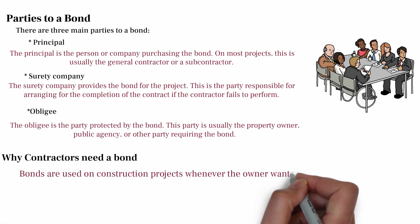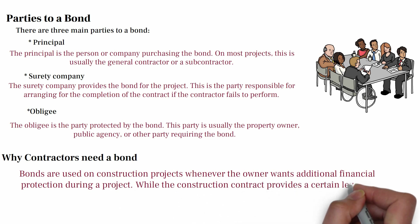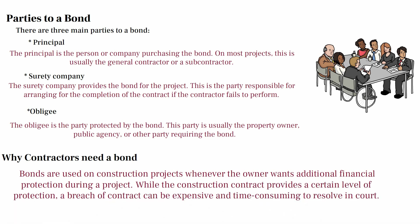Bonds are used on construction projects whenever the owner wants additional financial protection during a project. While construction contracts provide a certain level of protection, a breach of contract can be expensive and time-consuming to resolve in court. Particularly with large projects, the bond acts as an agreement between the contractor and the project owner, assuring the contractor will fulfill all the terms.